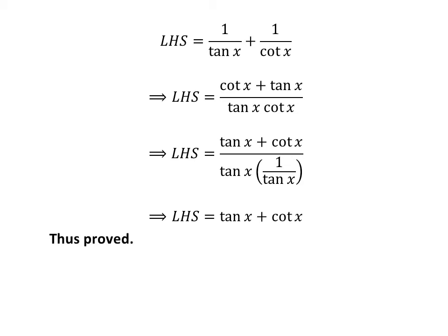In the denominator tangent of x times 1 upon tangent of x is equal to 1. So left hand side of the identity is equal to tangent of x plus cotangent of x which is equal to right hand side of the given identity. Thus we prove the identity.